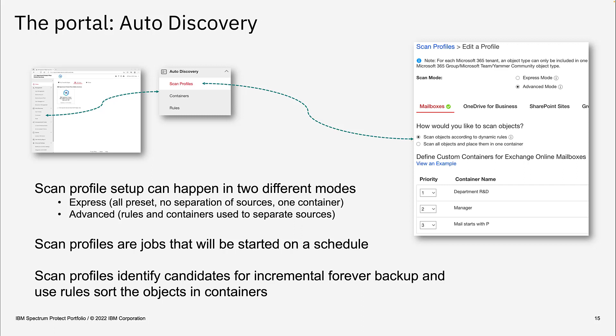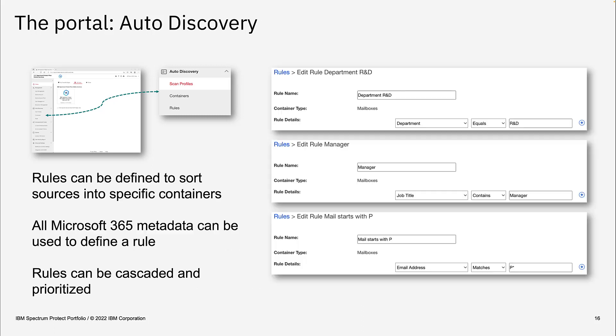As shown in the screenshot on the right, I have created three different rules. The first rule is for my department R&D, the second is for managers, and the third is for all mailboxes that start with the letter P. On the next slide, you can see how these rules are defined. When you define a scan profile in advanced mode, the wizard prompts you to define a rule and provide a rule name displayed in the UI.